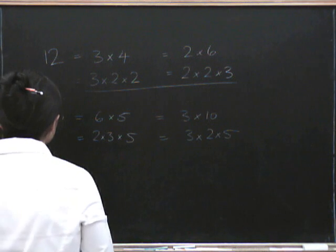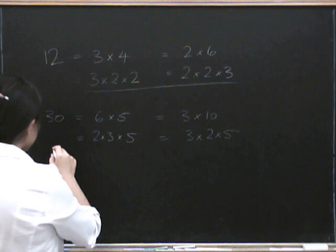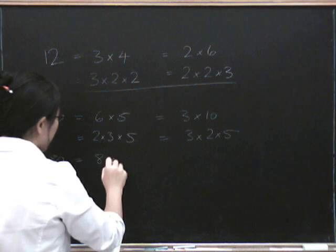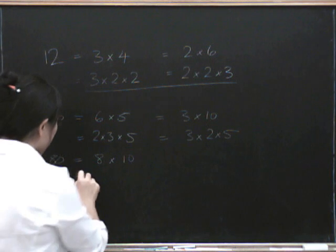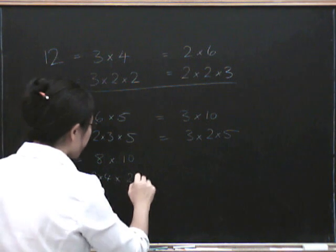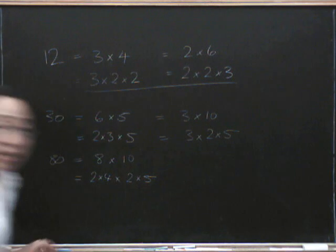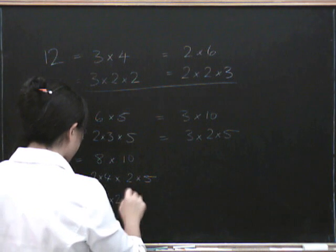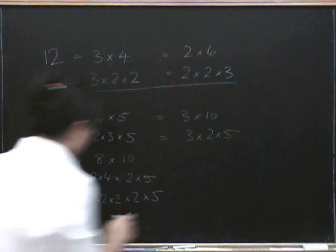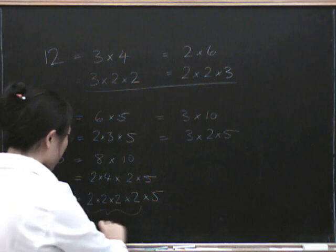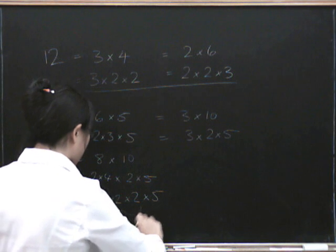Let's try another one with a few more things in it — let's try 80. 80 is 8 times 10. We know that 8 is 2 times 4, and 10 is 2 times 5. But there's still something we can do, because 4 is 2 times 2. So we get 2 times 2 times 2 times 2 times 5 — that's four 2s — so we've got 2 to the power of 4 times 5.